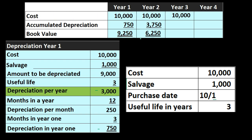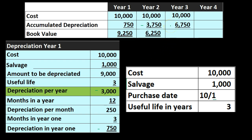For year three, we've got cost of $10,000. Accumulated depreciation is the prior year's $3,750 plus another $3,000, which equals $6,750. You can also think of it as the total depreciation over the three-year period: $750 + $3,000 + $3,000 = $6,750. Subtracting $6,750 from $10,000 leaves us a book value of $3,250.